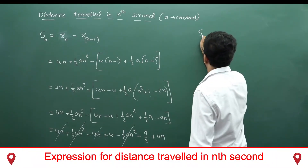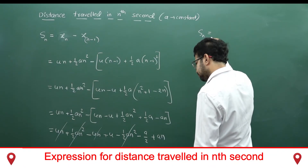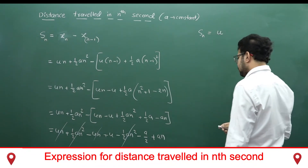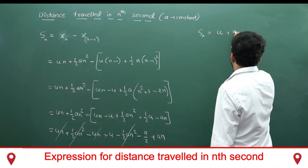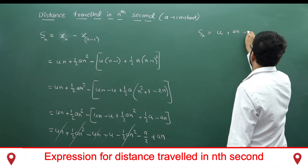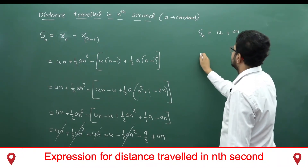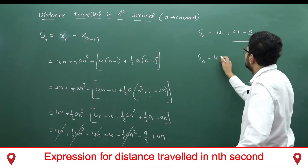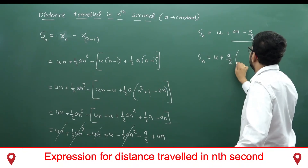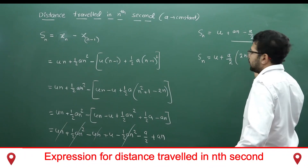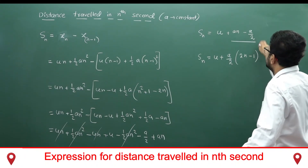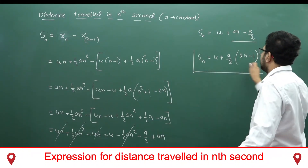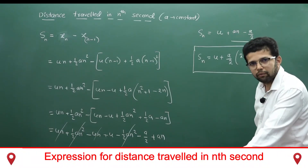S_n equals u plus a/2 multiplied by (2n - 1). We can cross-check: a/2 × (-1) gives -a/2, and a/2 × 2n, the 2s cancel to give +an. So the distance travelled in the nth second formula is: S_n = u + (a/2)(2n - 1).